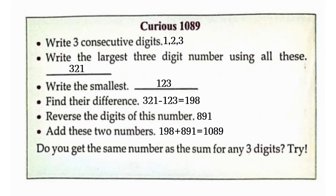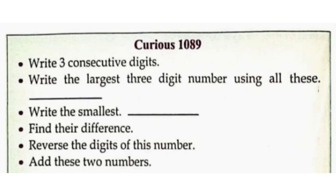Do you get the same number as the sum for any 3 digits? Try. So let's check. The 3 consecutive digits will be 2, 3, 4.